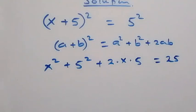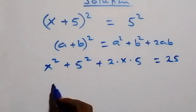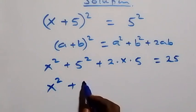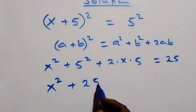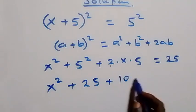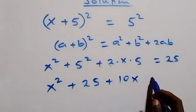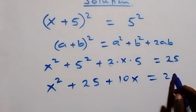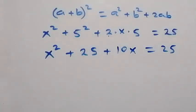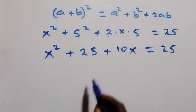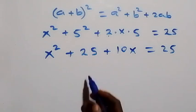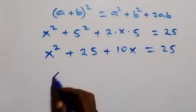So we have x² plus 5², which is 25, plus 2 times 5 times x — that's 10x — equals 25. From here, when we subtract 25 from both sides, we take 25 to the other side.